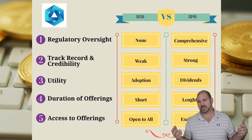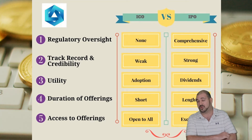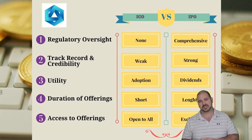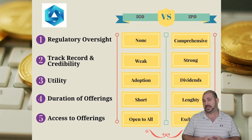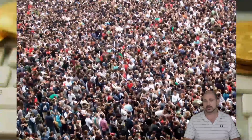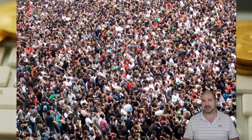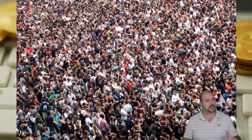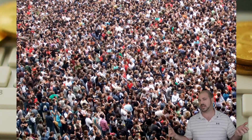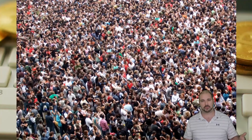For ICOs, utility comes from adoption — the more people using your platform, the better. IPOs deliver returns through dividends. ICO offerings typically lasted about a month while IPOs can run six months to a year. Access to ICOs was open to everyone, which was a double-edged sword. Informed investors who did thorough research could make huge money, but average investors would follow YouTube shills, throw money in, and some projects bombed.